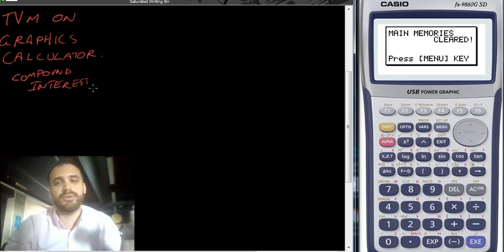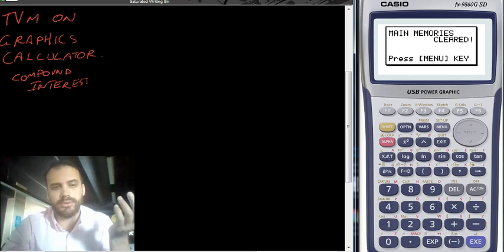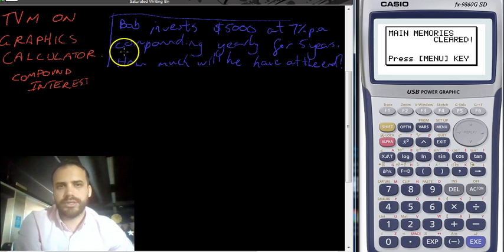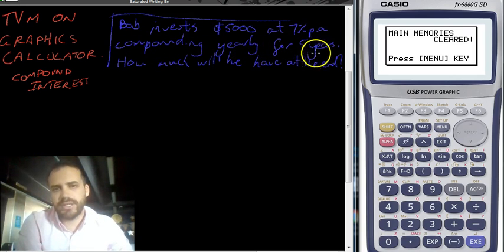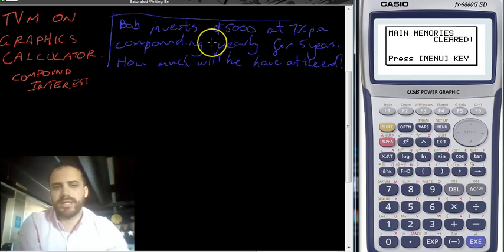So I'm just going to jump straight into a question, we'll do it on a calculator so you can see how it works. So a question like this: Bob invests $5,000 at 7% per annum compounding yearly for 5 years. How much will he have at the end?